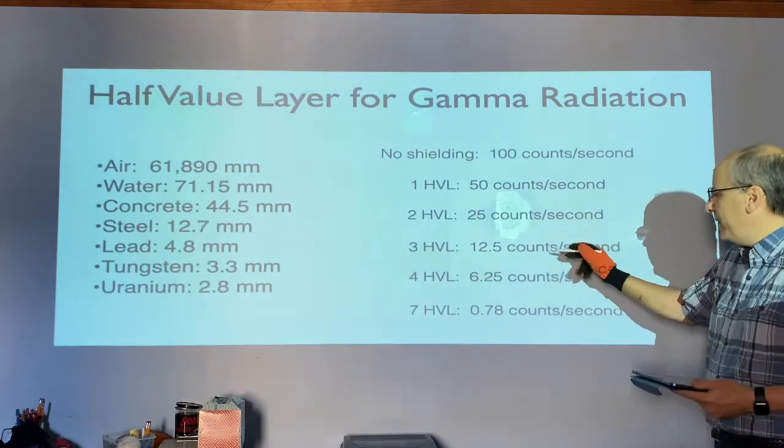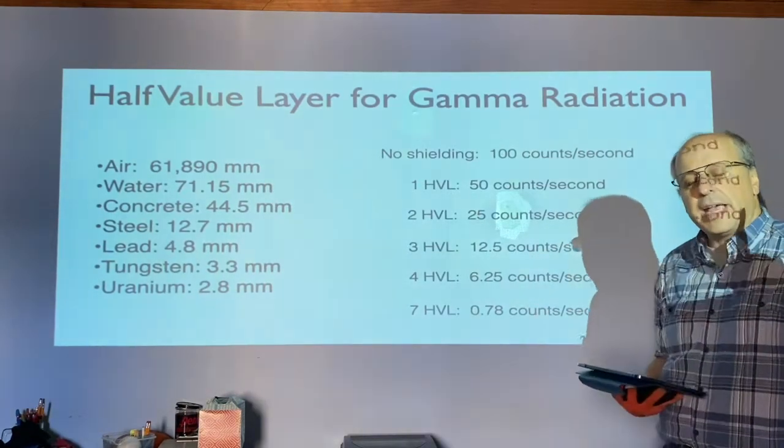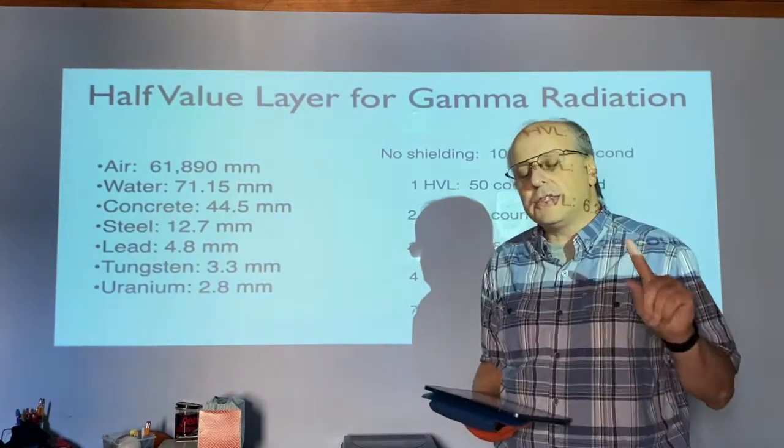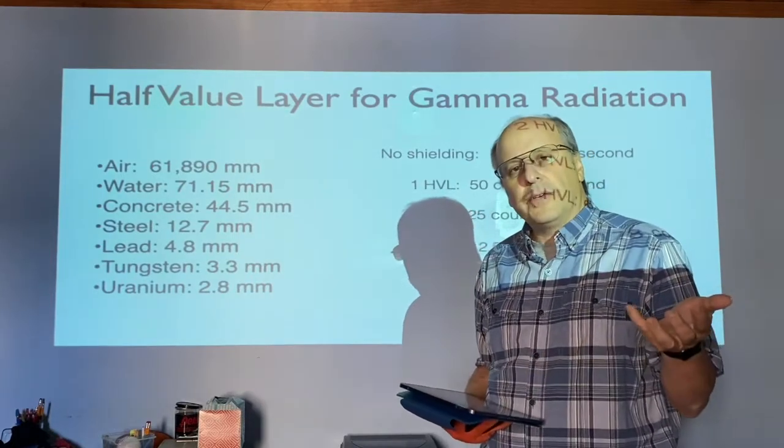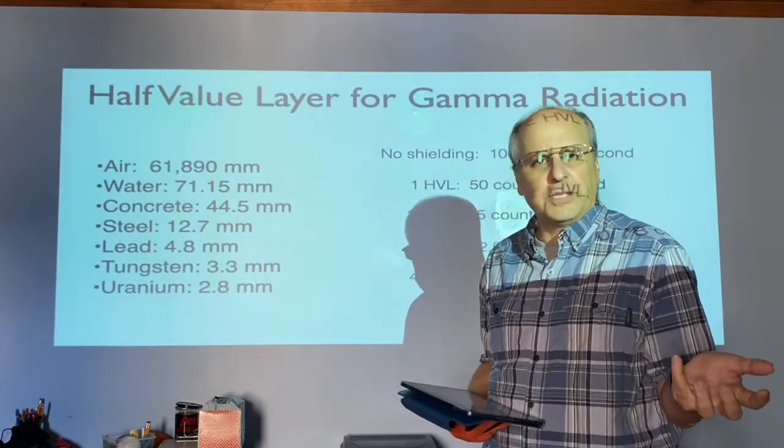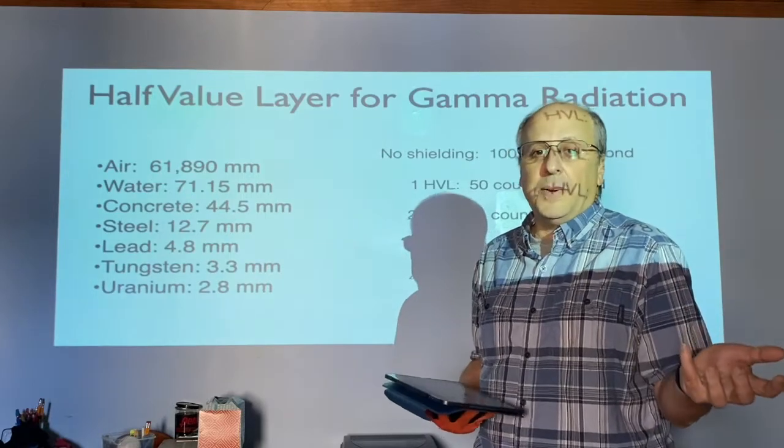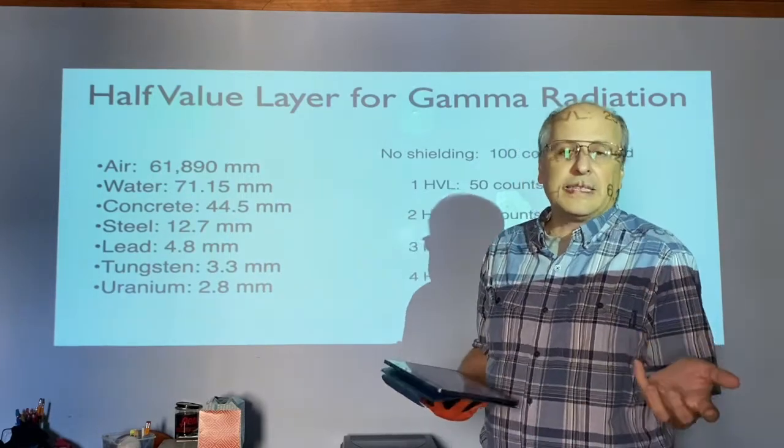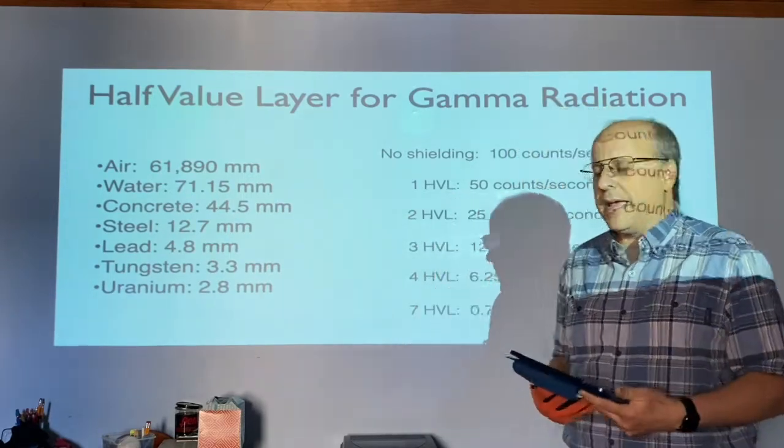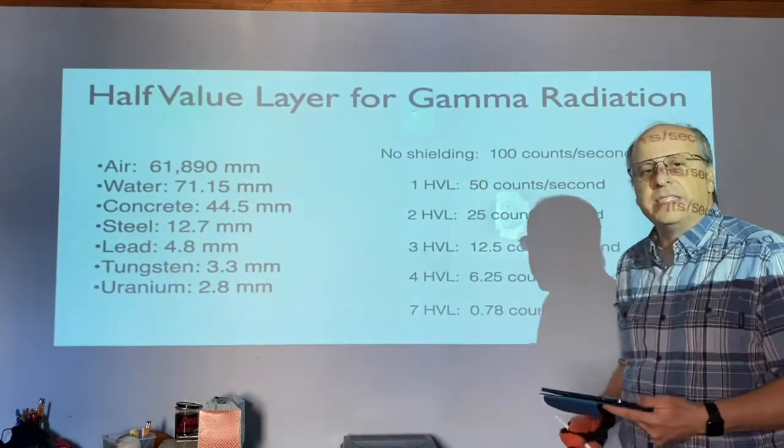At some point, you're going to get the counts less than one per second. That doesn't mean you stopped all the radiation. It means you'll get hit by less than one particle per second. So one second you might not get hit with any, the next second you might. It is impossible to get it down to zero.